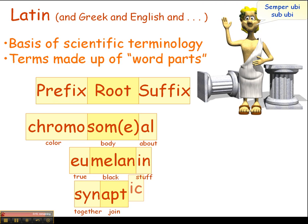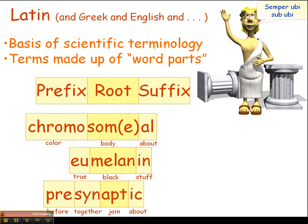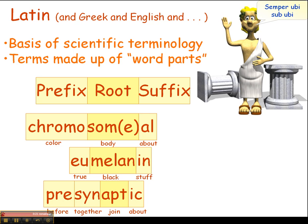Here's another example. 'Apt' means to join. When we put the prefix 'syn' in front of it, it means to join together — a junction, often used as a junction between two cells. If we add '-ic,' it makes it an adjective. 'Synaptic' means pertaining to a synapse or junction between cells. And 'pre' means before that junction, so 'pre-synaptic' means before a junction between two cells.